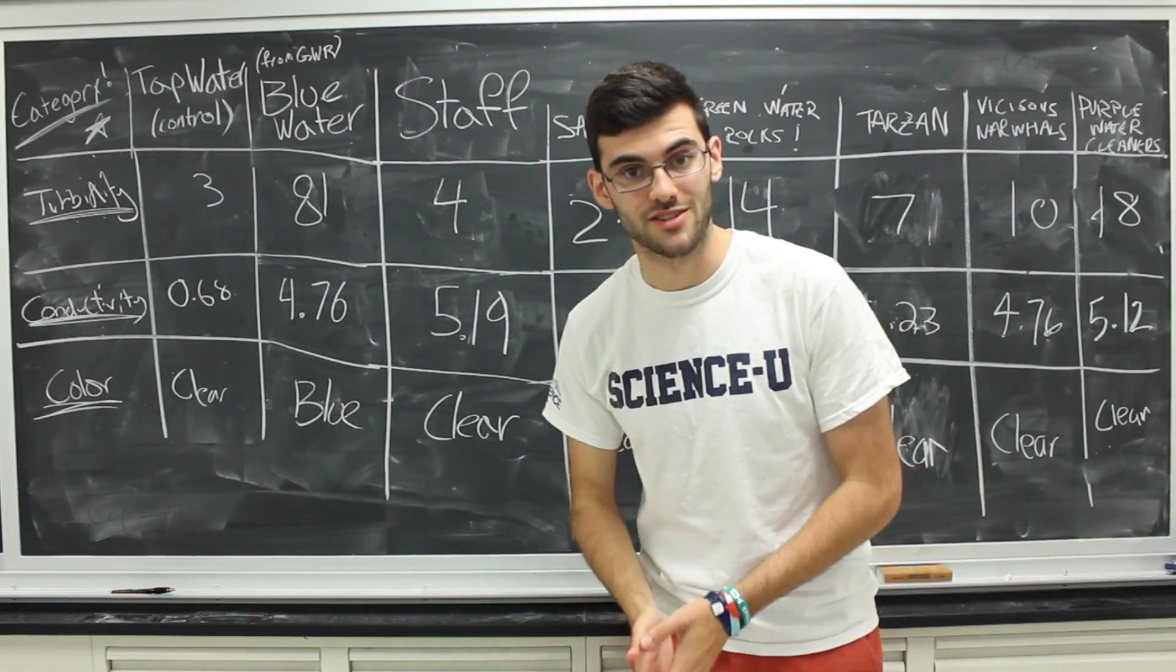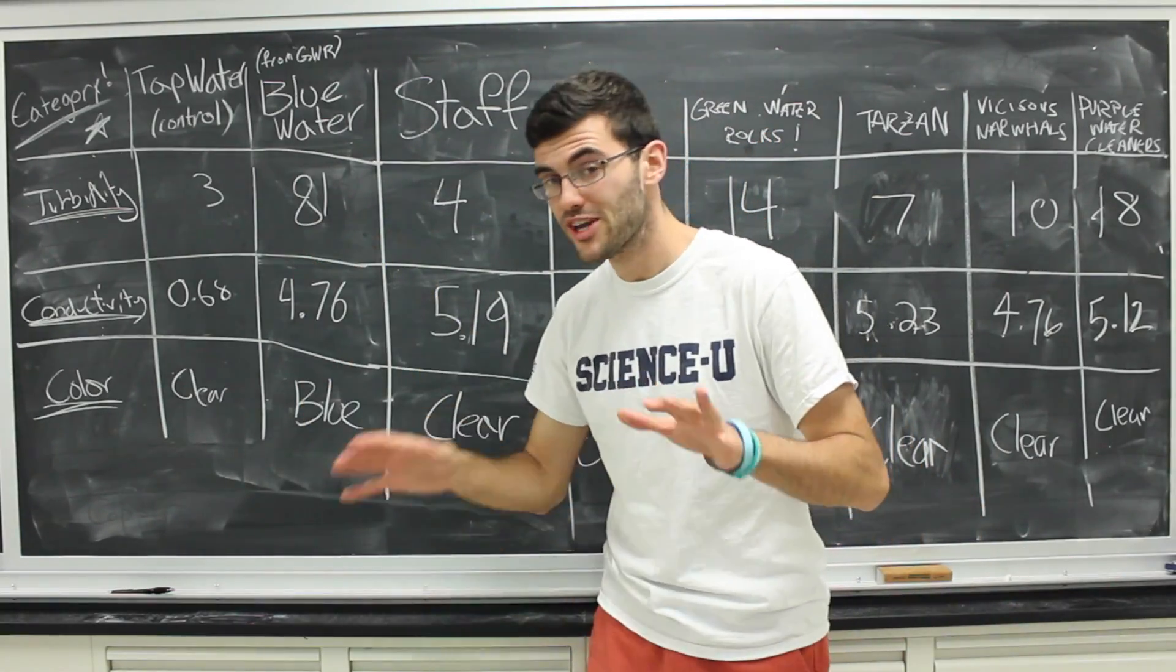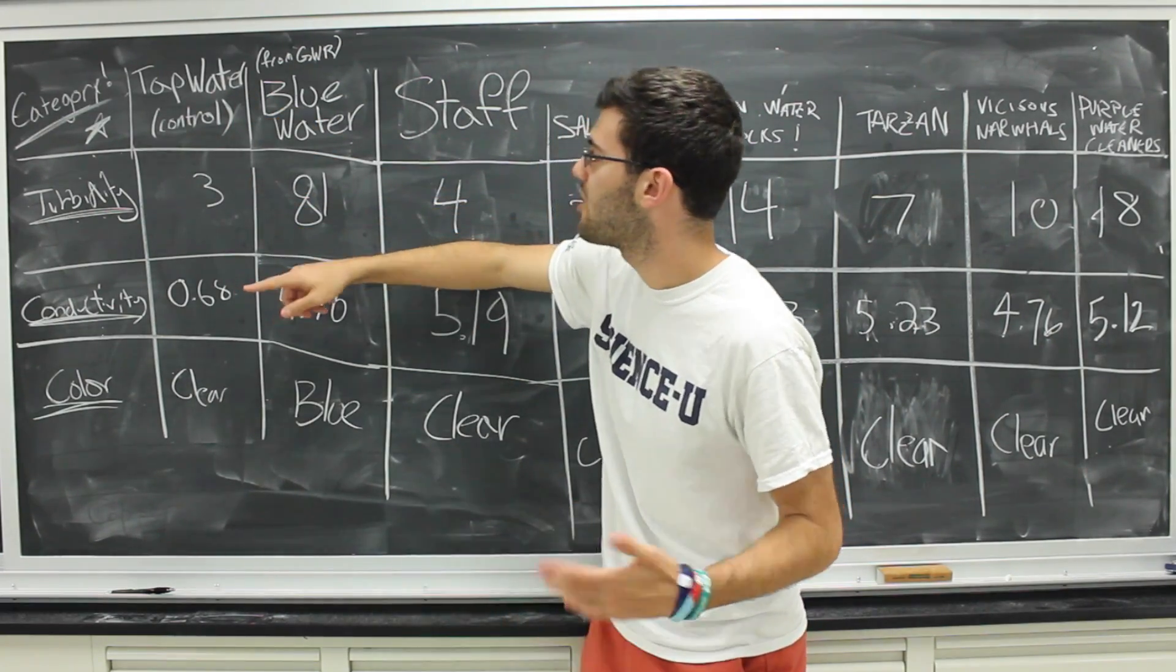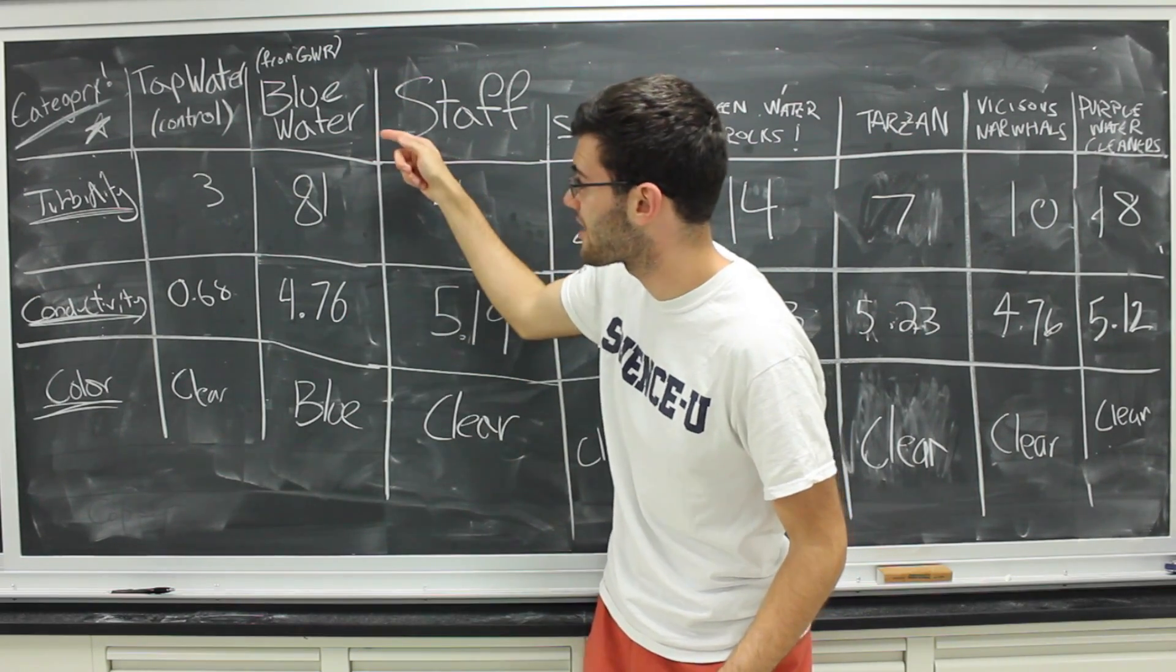These are our final results. First, for comparison, we have the turbidity or murkiness of tap water and also its salinity, its saltiness. We also have that for the blue water from which we started.